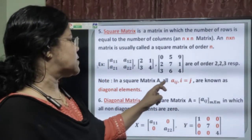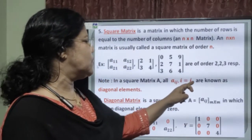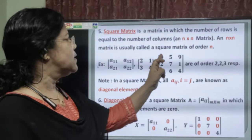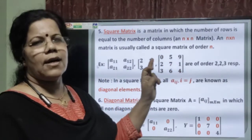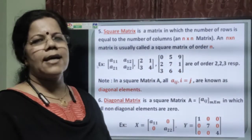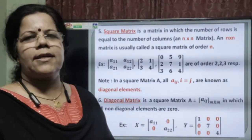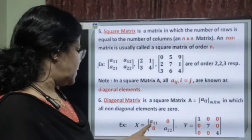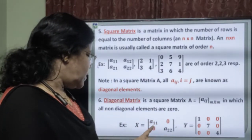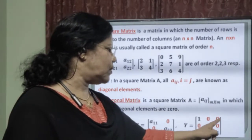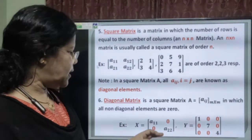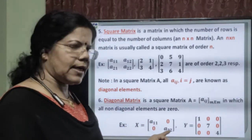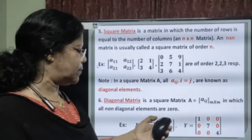In a square matrix, all A_ij where i equals j are known as diagonal elements. Here, A_11 and A_22 are diagonal elements; 0, 7, 4 are diagonal elements; 2 and 4 are also known as diagonal elements. Next comes the diagonal matrix. A diagonal matrix is a square matrix where all the non-diagonal elements are 0. A_11 and A_22 are diagonal elements — that is why it is called a diagonal matrix.